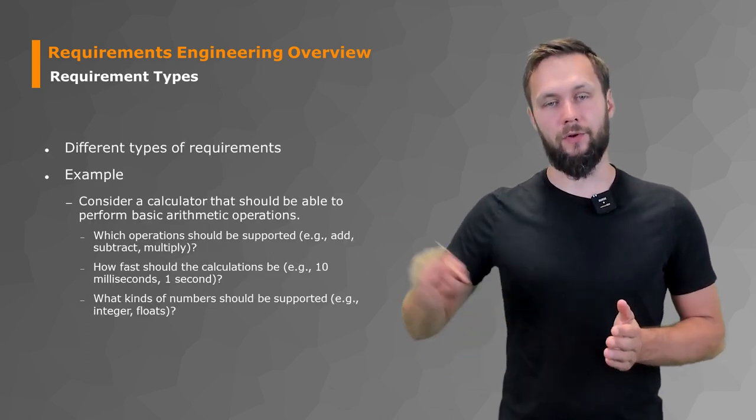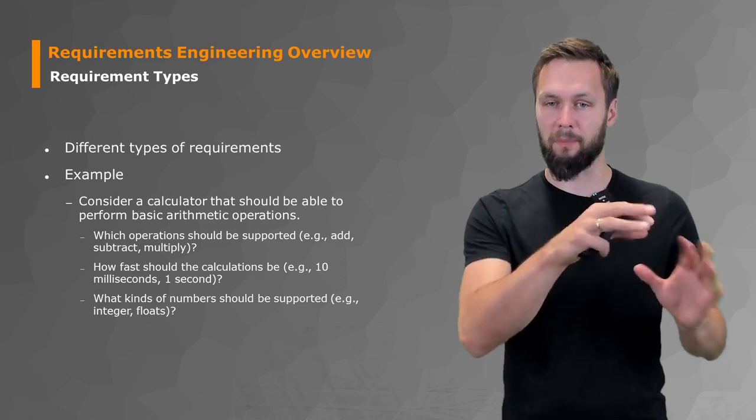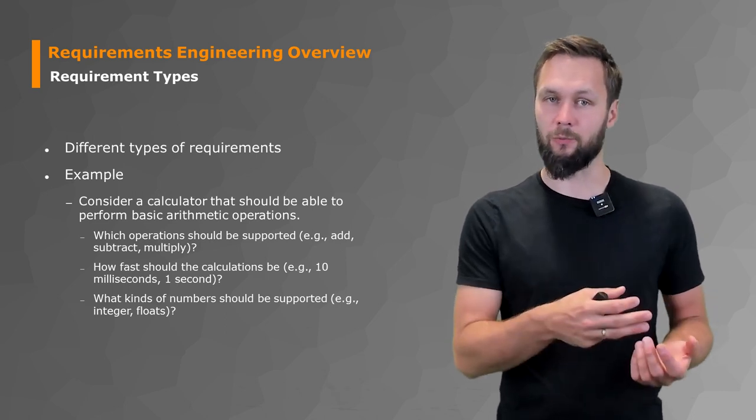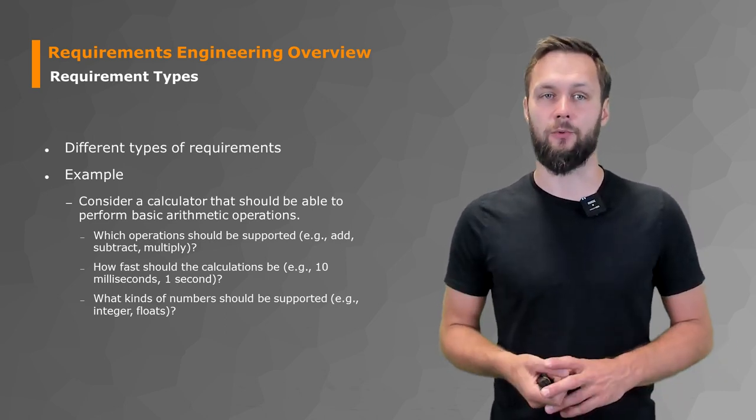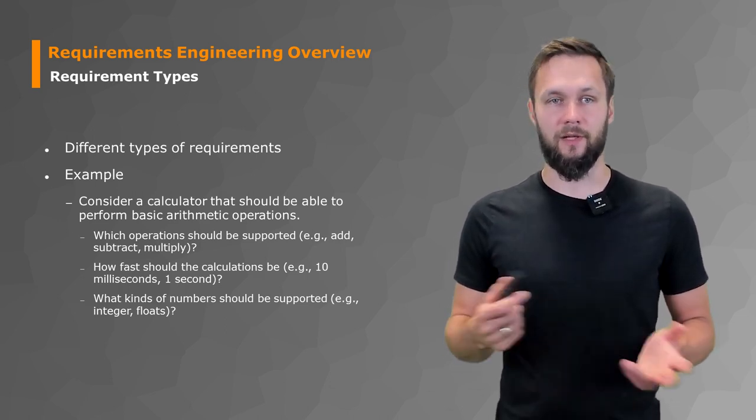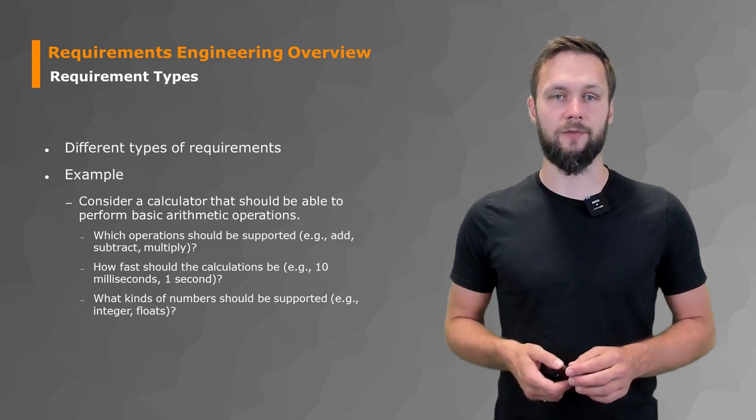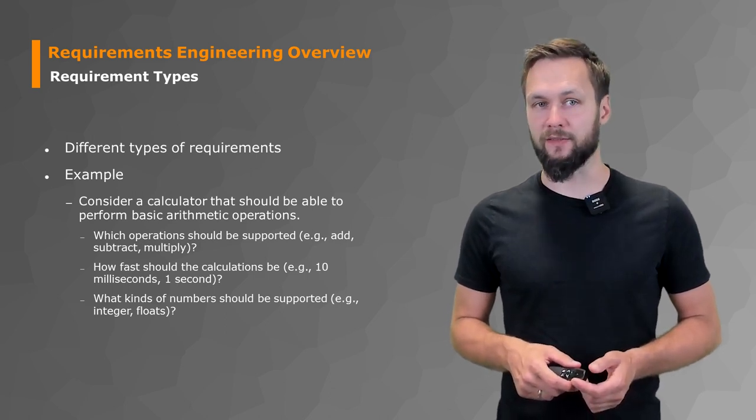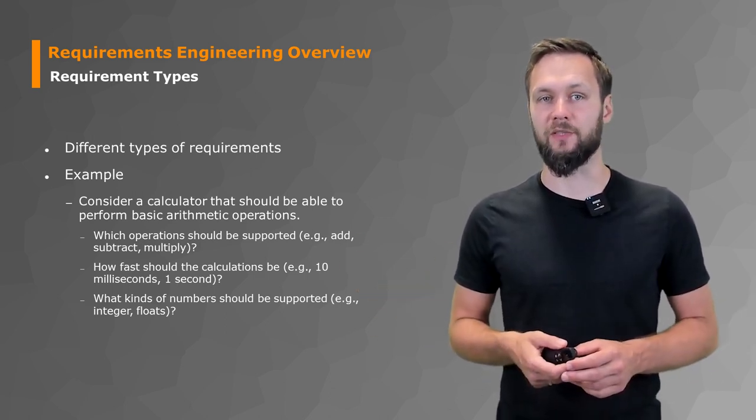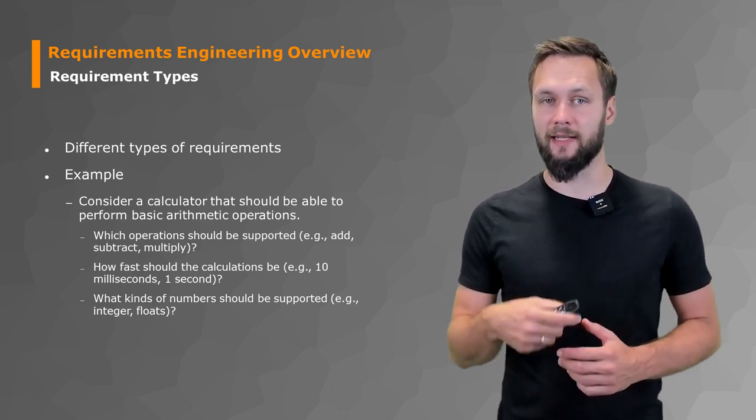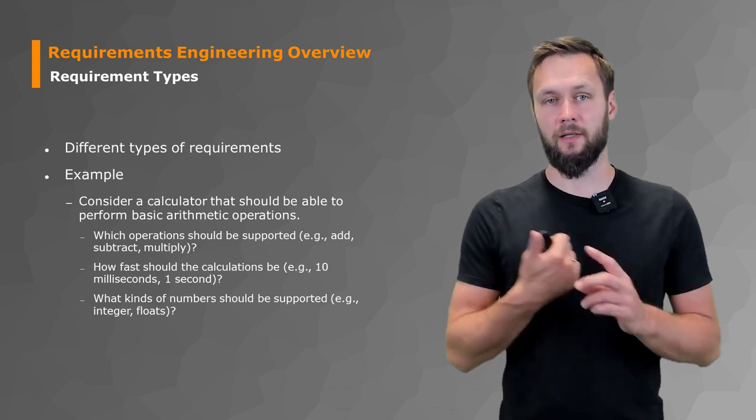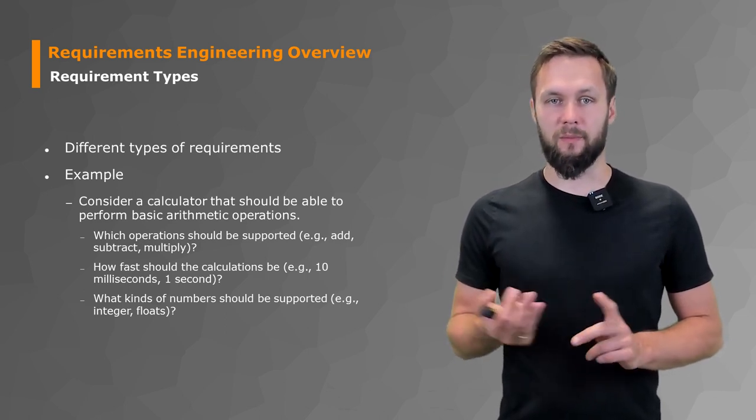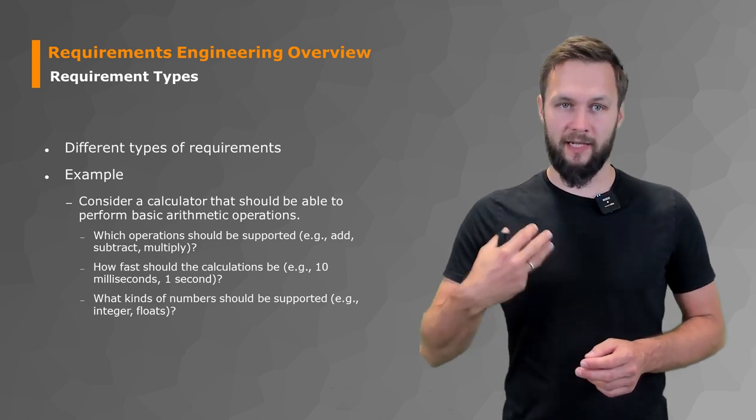If we move further into the different tools and building blocks that we need for requirements engineering, we also have to think about requirement types. We defined what a requirement is, but there are different types of requirements. Here are a few examples using the simple use case of a calculator. A calculator should be able to perform basic arithmetic operations. For example, which operations should be supported? A requirement could be a simple calculator where you can just add, subtract, and multiply.